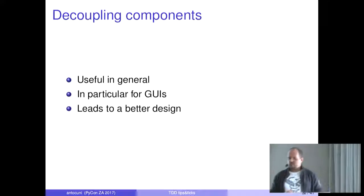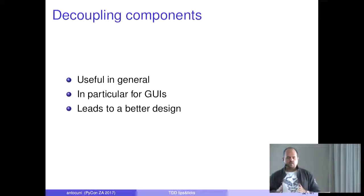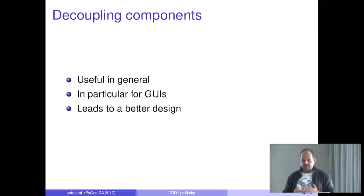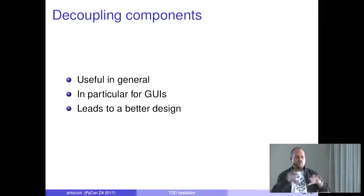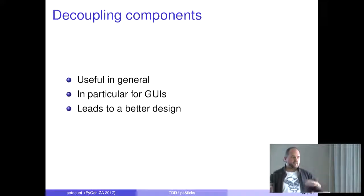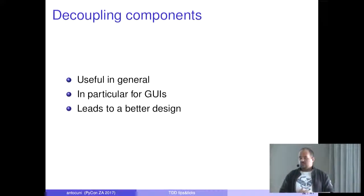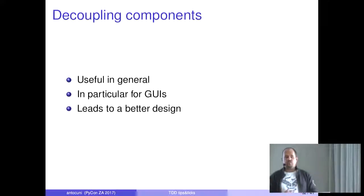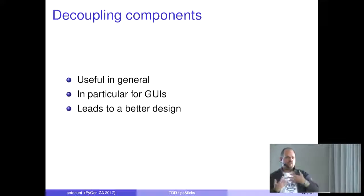This example also shows that test-driven development brings us to a better design of our programs. In particular, if you follow certain patterns, you end up with a code base where your components are nicely decoupled — they depend on each other but are written in isolation so you can test them in isolation. This is a pattern which is useful in general, but in particular it's useful for graphical applications, because GUI applications, if not written in a good way, tend to mix the logic for computing the result with the logic for presenting the result to the user.